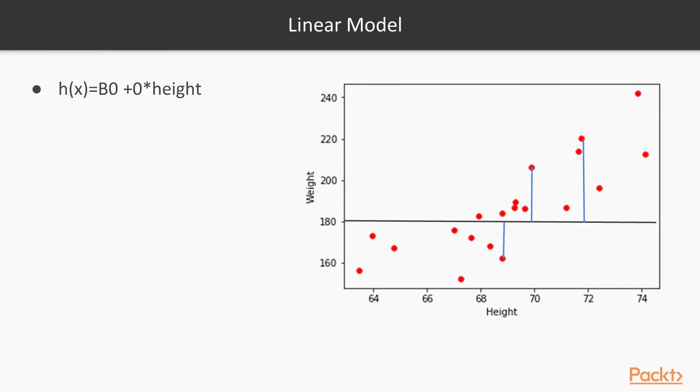Next, let's say we make the slope of the line 0. So we get a flat line, which has huge errors. So our task is to find the perfect fit, so that we can reduce these errors between the actual weight and the predicted weight.